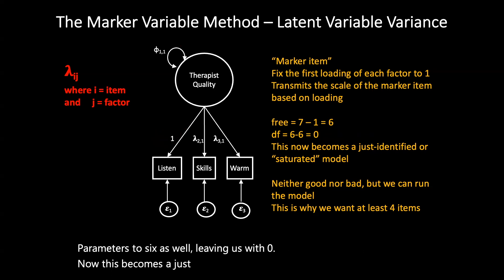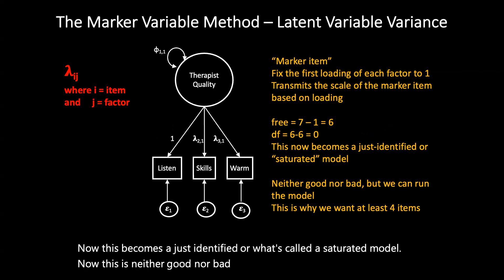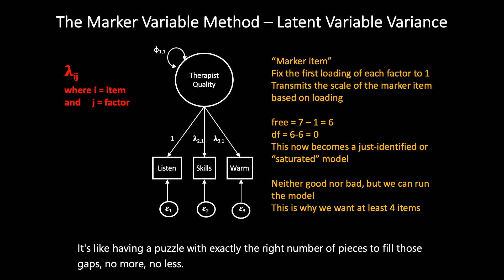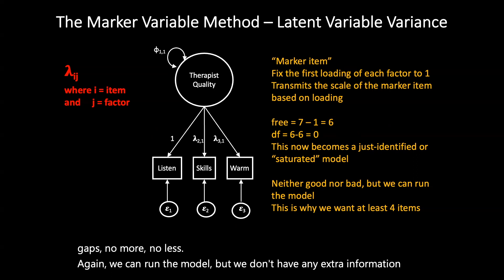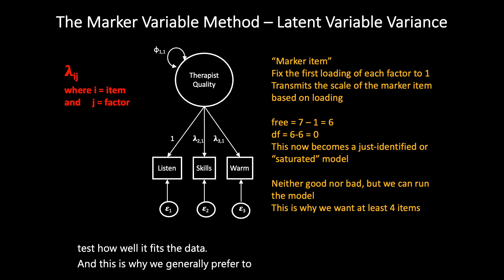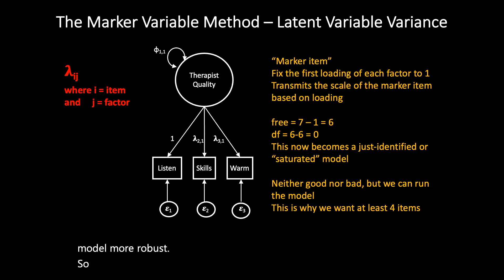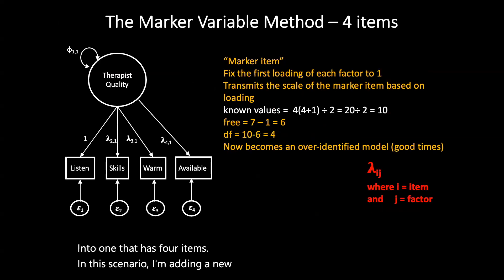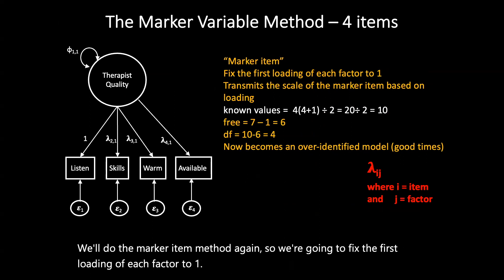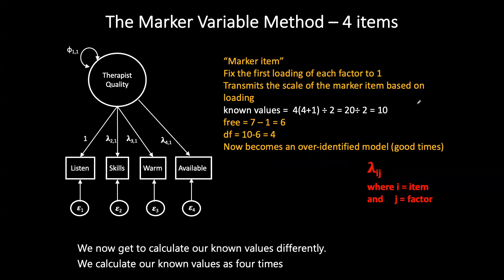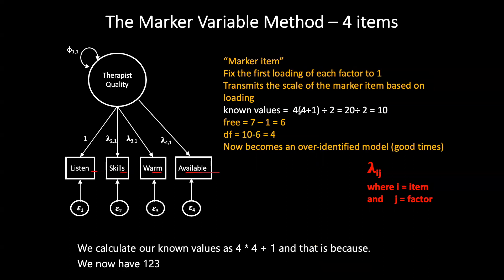A just-identified model is neither good nor bad, but we can run the model now — it's like having a puzzle with exactly the right number of pieces to fill the gaps, no more and no less. However, we don't have any extra information to test how well it fits the data. This is why we generally prefer to have at least four items in our model, because more items provide more information and make the model more robust. When I turn this model into one that has four items by adding a new item called 'availability' for a therapist, we apply the marker item method again and fix the first loading to one.